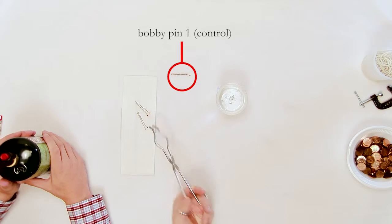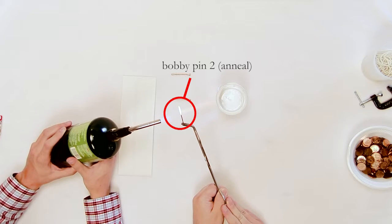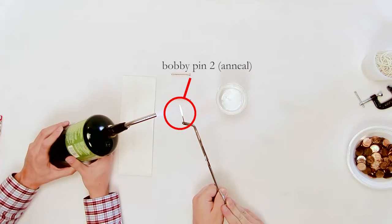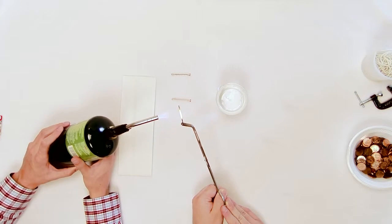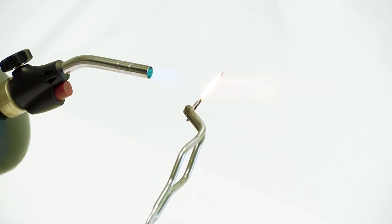Set aside one pin to be used as the control. The control sample will not receive any heat treatment. Heat a second pin using the Bunsen burner or torch. The entire pin should be heated until the bobby pin glows red hot. Keep the bobby pin in the flame for 20 to 25 seconds after it starts glowing red.